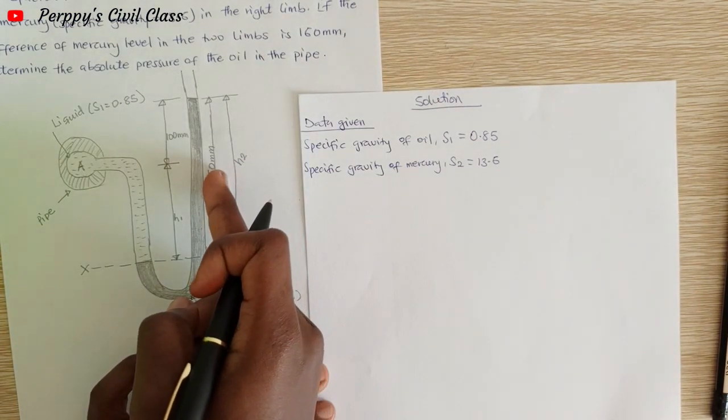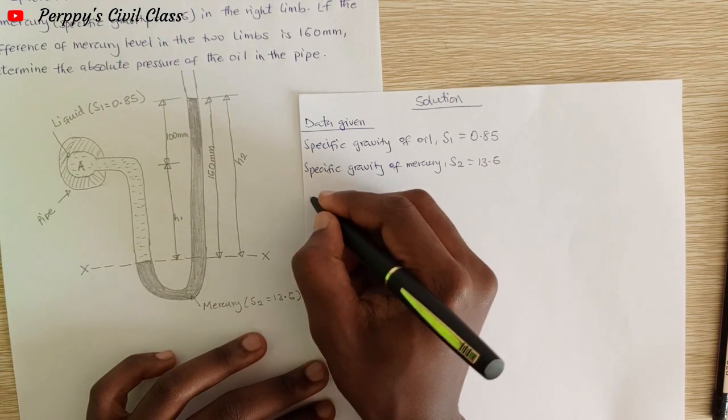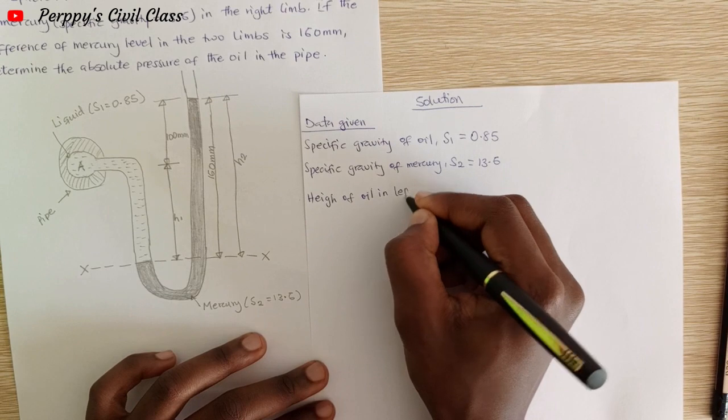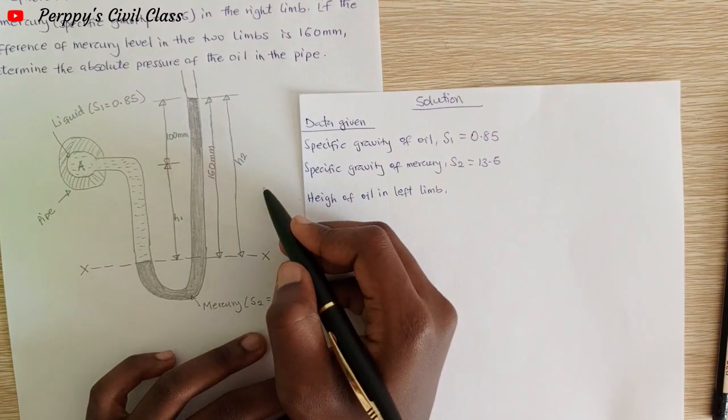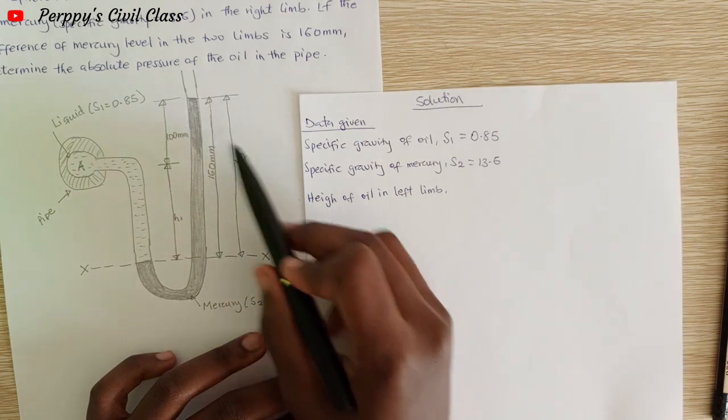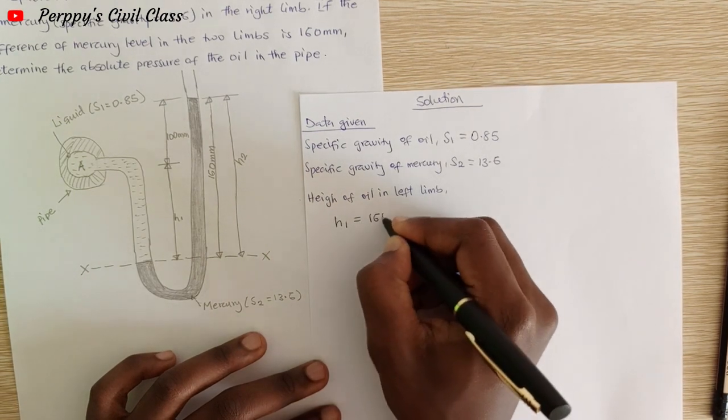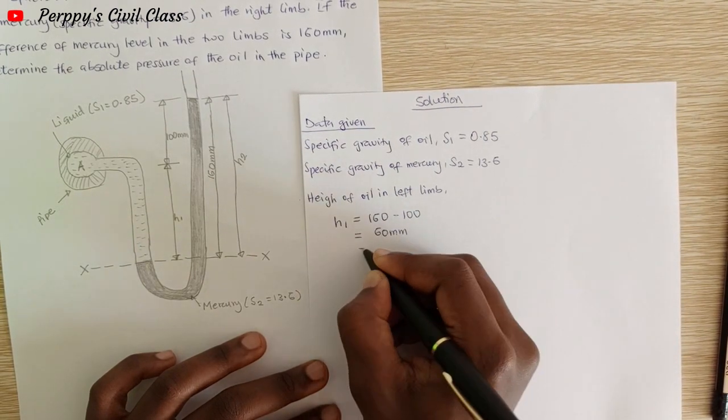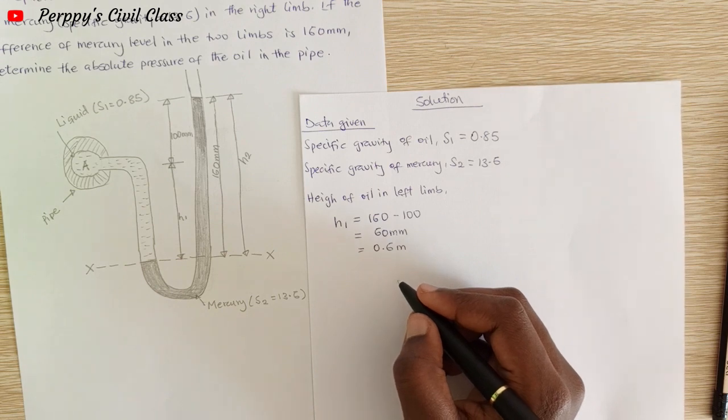Now the height of the oil in the left limb: the right limb is 100 mm, so to get h1, you have to subtract h2 from 100. So h1 equals 160 minus 100, which gives us 60 mm, that's 0.06 meters.